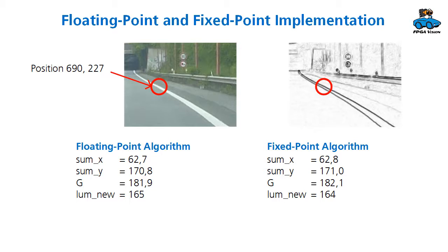For the floating point algorithm, you get at the position that is indicated here, the values shown on the left. So, the luminance value that is calculated is 165. And for the fixed point algorithm, you get slightly different values, which, due to different rounding, has another luminance value of 164. This is a small difference. So, the algorithms are not identical, but they are so close together that we can accept the fixed point algorithm.